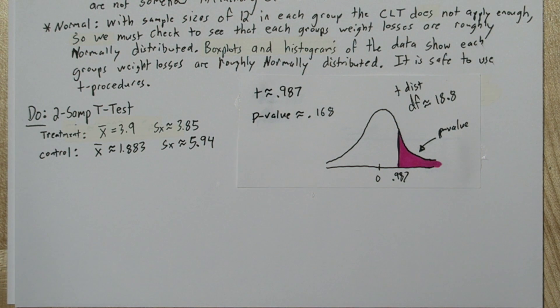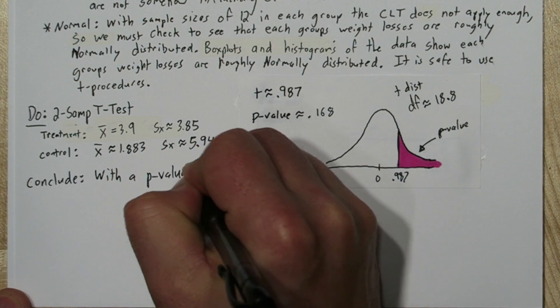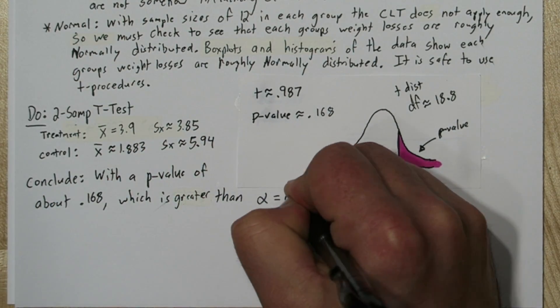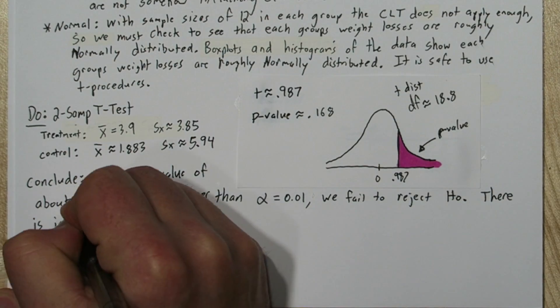Now this p-value isn't very low. So for our conclusion we'll say, with a p-value of about 0.168, which is greater than alpha equals 0.01, we fail to reject the null hypothesis.